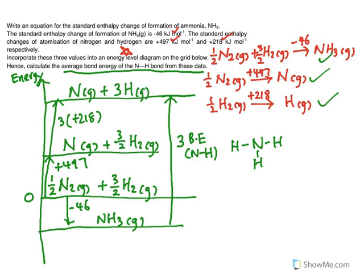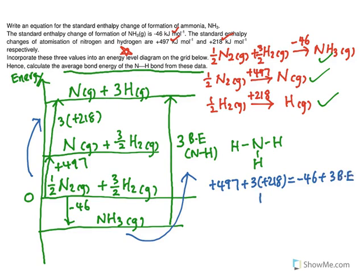Remember, clockwise equals to anti-clockwise. So, for this case, the working will be +497 + 3(218). This is your anti-clockwise. This part here, anti-clockwise equals, sorry, your clockwise equals to your anti-clockwise here, which is equals to -46 + 3BE. And you solve for BE.